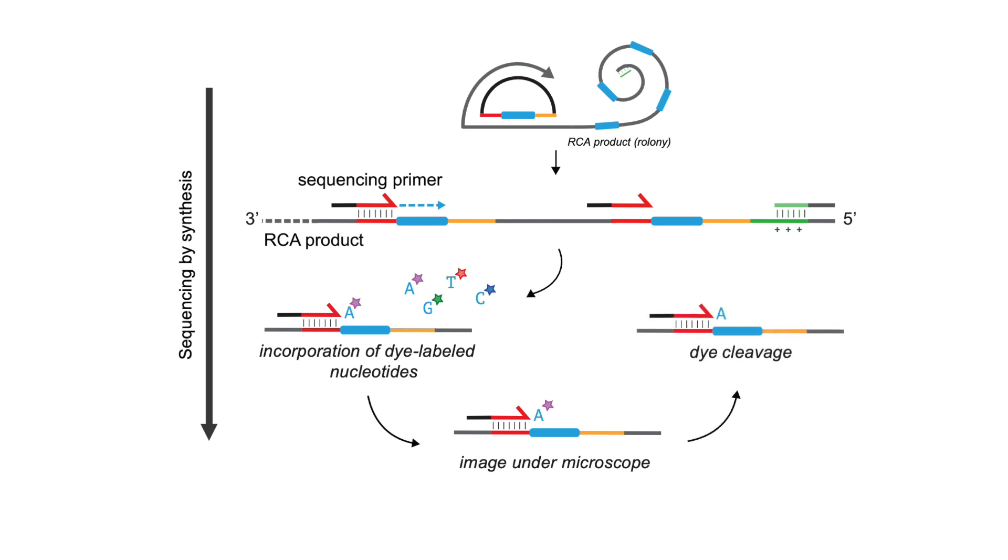Next, we use a cleavage mix to remove the fluorescent dye and terminator from the incorporated base, priming the sample for the next round of sequencing. After another incorporation step, the cells are imaged to read out the second base position. By performing multiple rounds of sequencing, we can uniquely resolve all perturbations in a complex library.